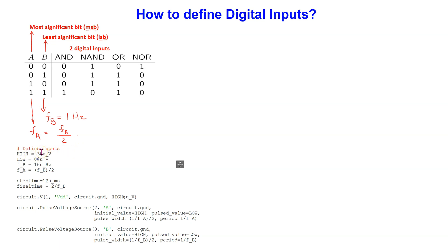Using this fact, we can define inputs A and B as shown using the two pulse voltage sources. For the least significant bit, we assume a nominal frequency of 1 Hz for simulation purposes and define the simulation step time and the final time accordingly.